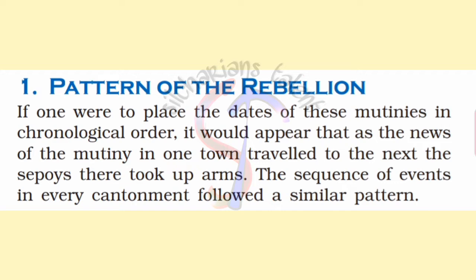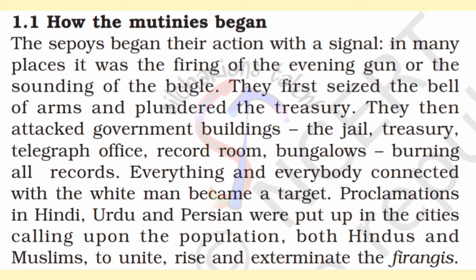We now move to our first subtopic: the pattern of the rebellion. If one analyzes the outbreak of revolts in chronological order, it would appear that the news of the mutiny spread like wildfire, and one cantonment after another took up arms against the British. The sequence of events in every cantonment followed a similar pattern.